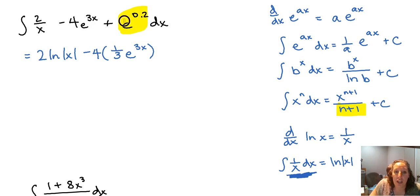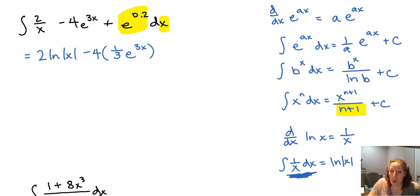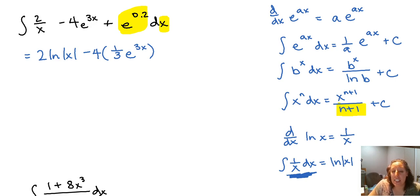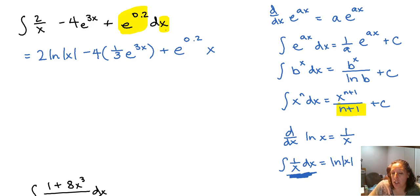This last term, e to the 0.2 — there is no x in this term, and we're taking the derivative with respect to x. Even though e to the 0.2 doesn't look like a regular number, we treat it like one because there is no x. E is an irrational, never-ending, never-repeating decimal approximately equal to 2.7, so e to the 0.2 is just a number. We treat it just like a 5, so that term becomes e to the 0.2 times x.